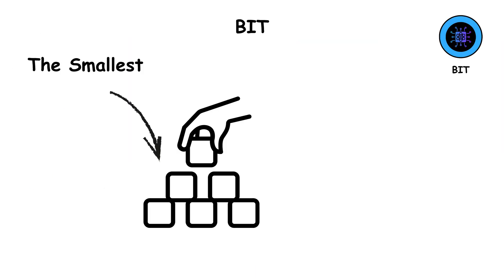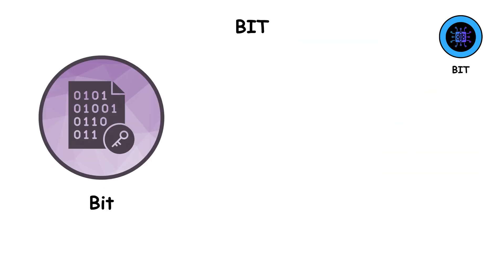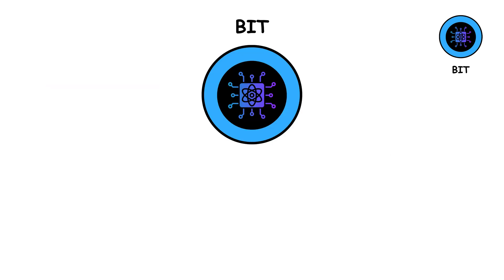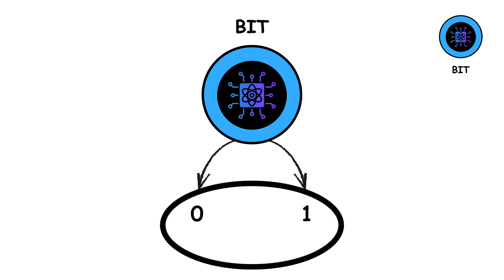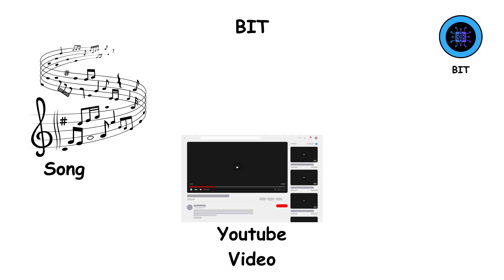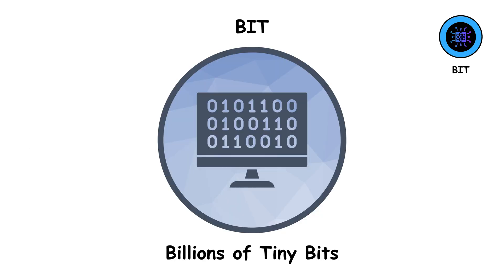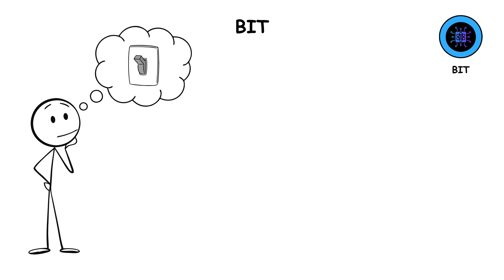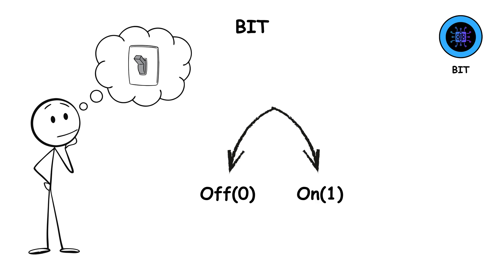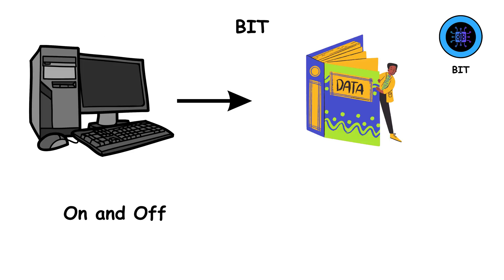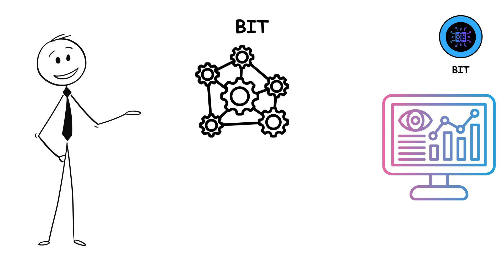The smallest building block of all digital information is the bit, short for binary digit. A bit can only have two possible values: zero or one. That's it, just two options. But from these two numbers, everything digital is born. Your favorite song, that YouTube video, your photos — all of it is made up of billions of tiny bits, each one being either a zero or a one. You can imagine a bit like a light switch: it's either off (zero) or on (one). When computers process data, they use these on and off signals to represent information. So when you see complex visuals on your screen, it's all just millions of little bits working together to create meaning.